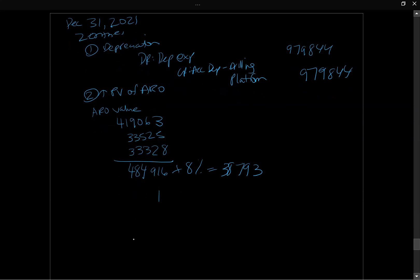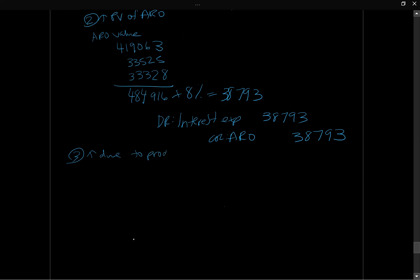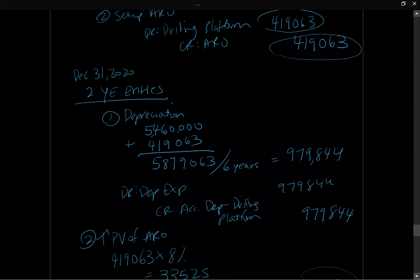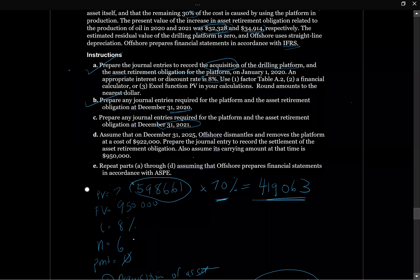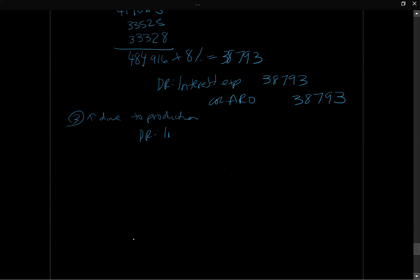Under IFRS, we record the increase in present value of the ARO to interest expense with a credit to ARO. Then, for the increase due to production in 2021 — looking back at the question, it gives us the amount as $34,914. Under IFRS, that debit goes to Inventory as a product cost, and the credit is to ARO for $34,914.